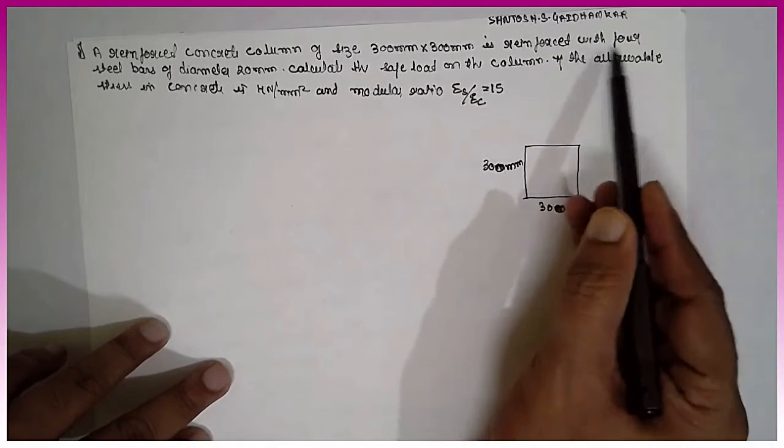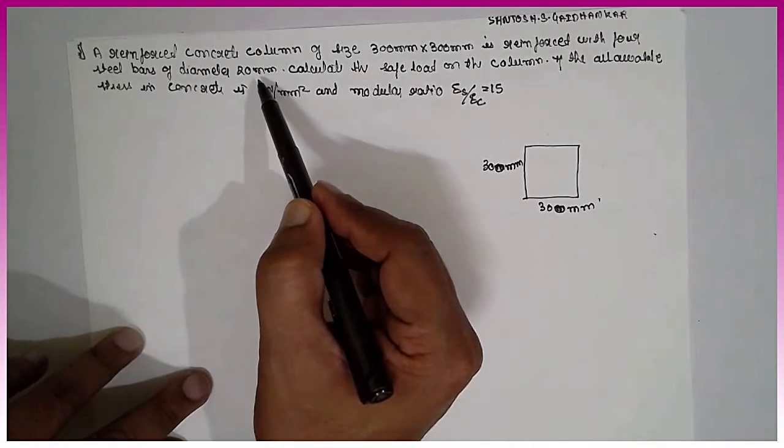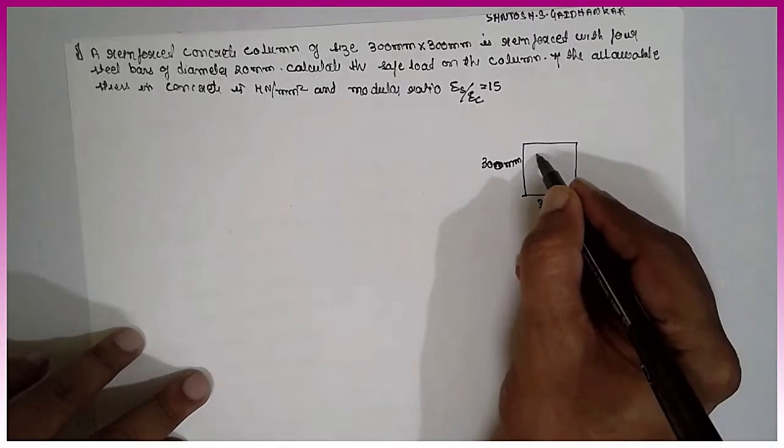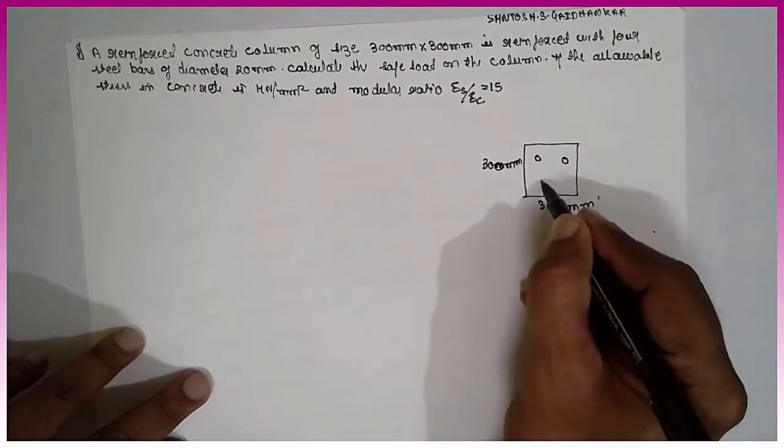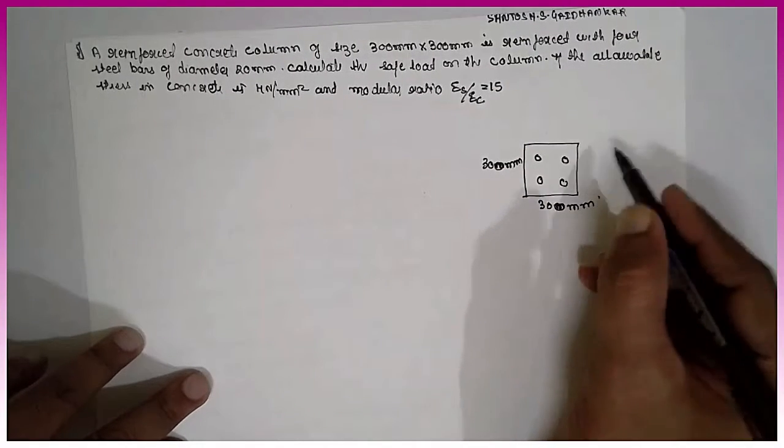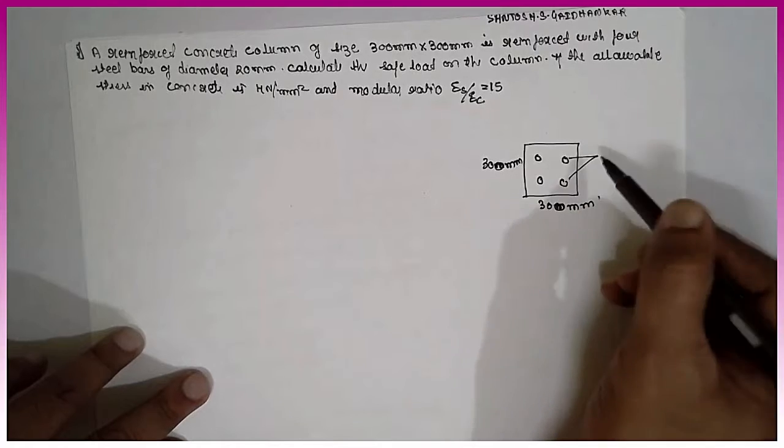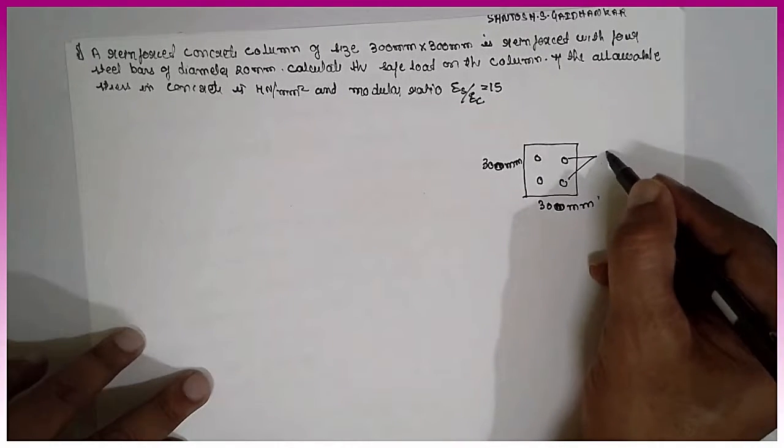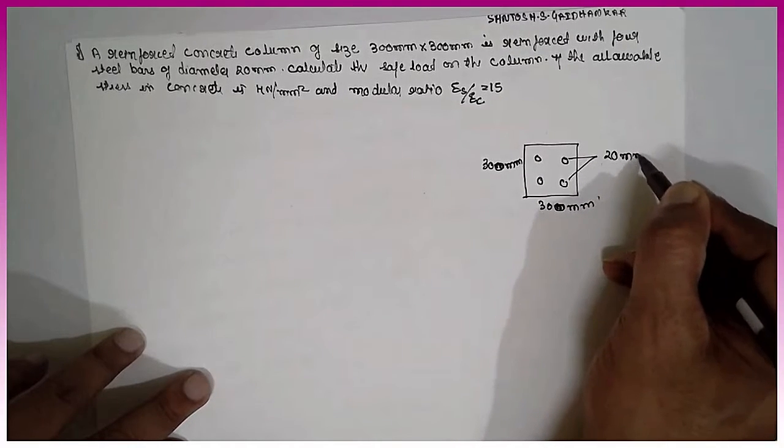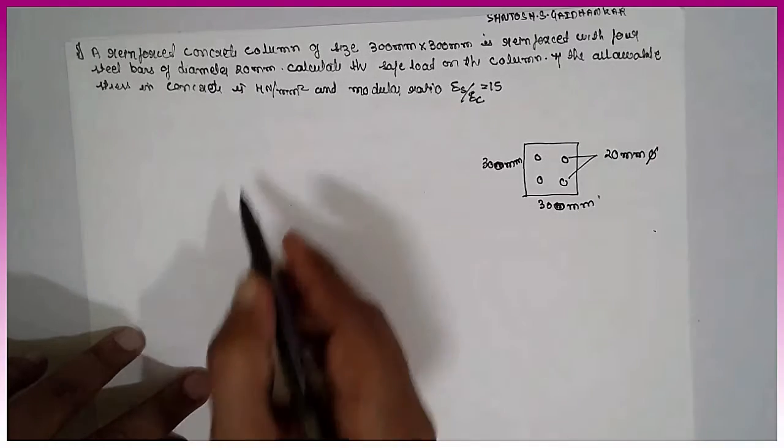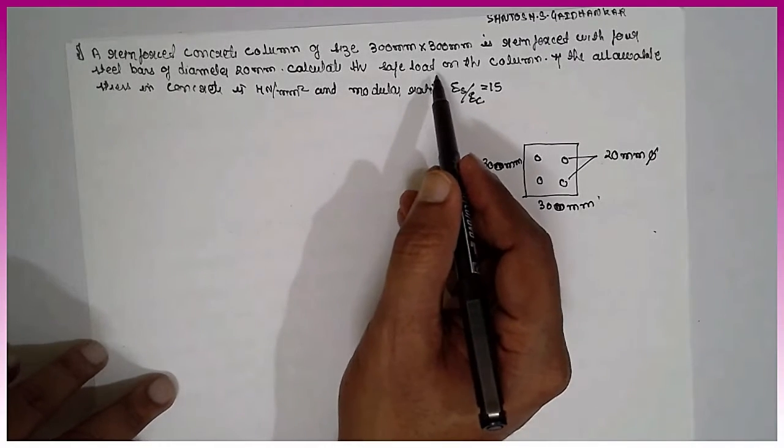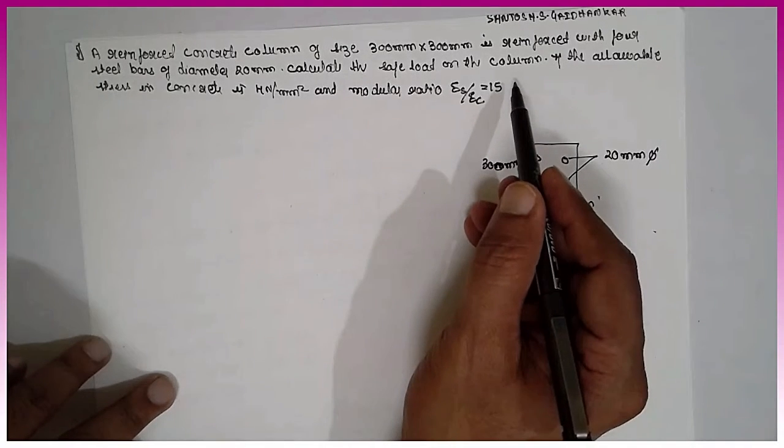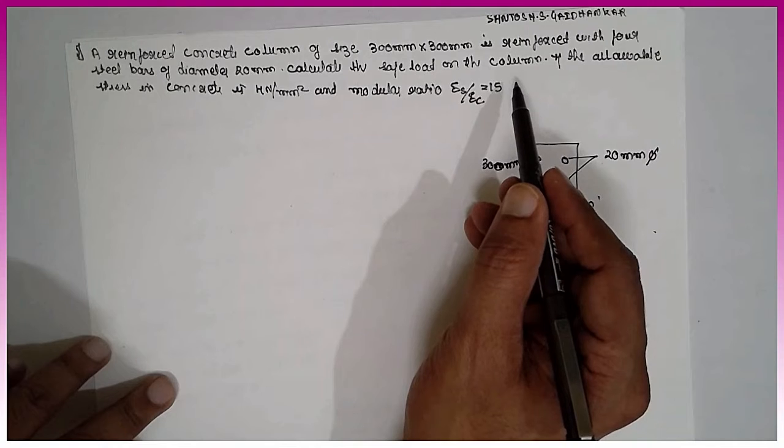It is constructed with 4 steel bars of diameter 20 mm. Calculate the safe load on the column. We have to find out the safe load on the column.